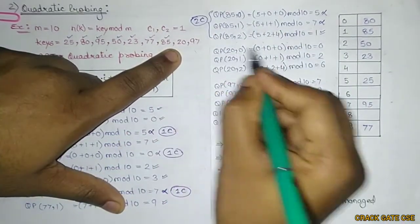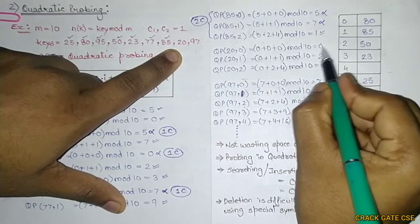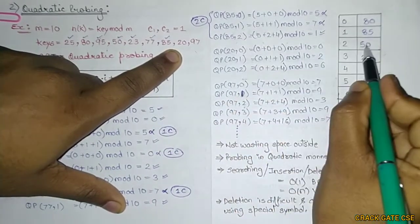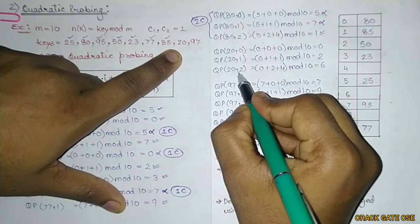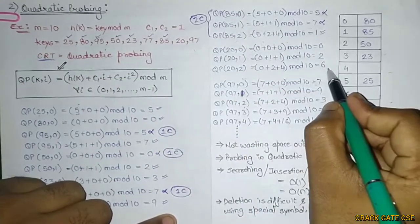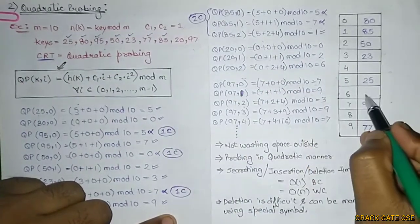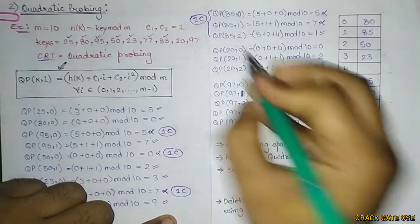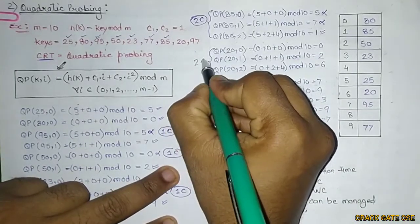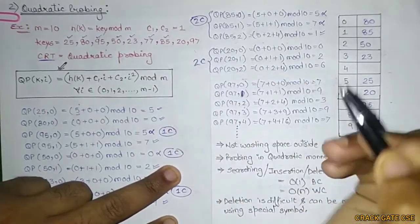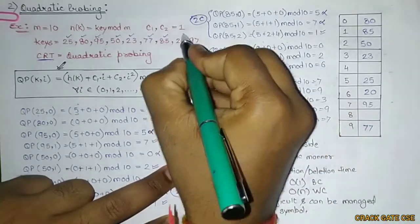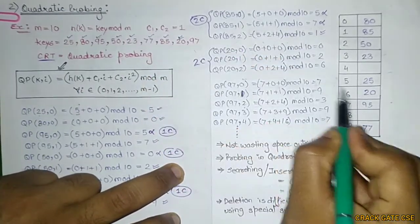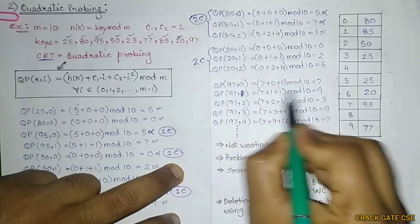For key=20, i=0: slot 0 is full (80). i=1 gives slot 2 — full (50). i=2 gives slot 6, which is empty, so 20 is stored at slot 6. That is 2 collisions for key 20.